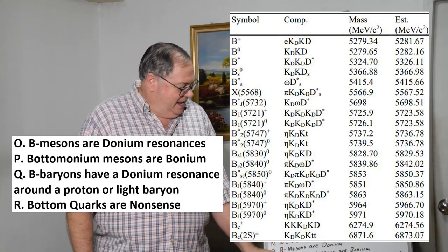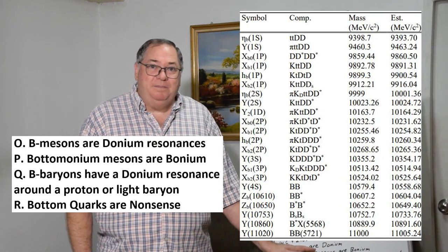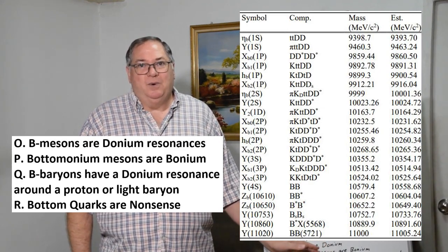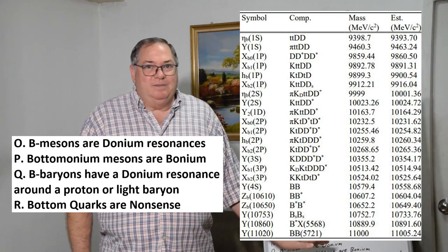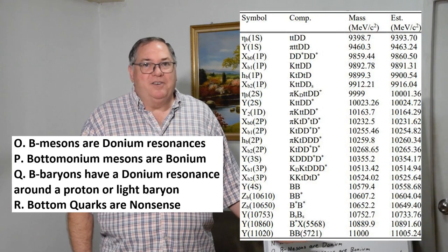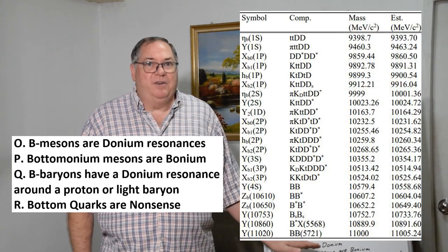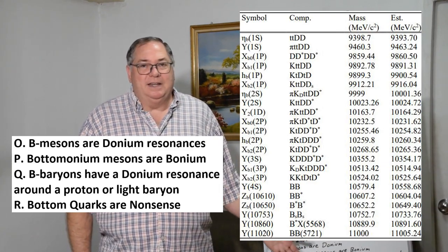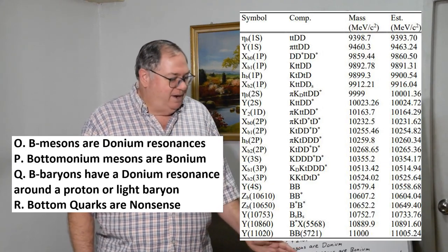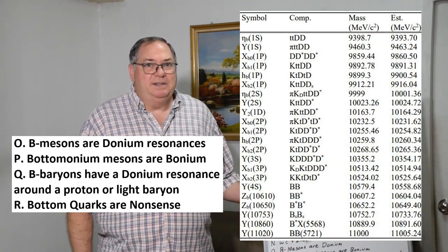The bottomonium mesons are bonium - they're two B mesons or they're four D mesons in orbit or in combination. That gives you all of these mass estimates, once again, almost entirely to 0.1% relative using these models.